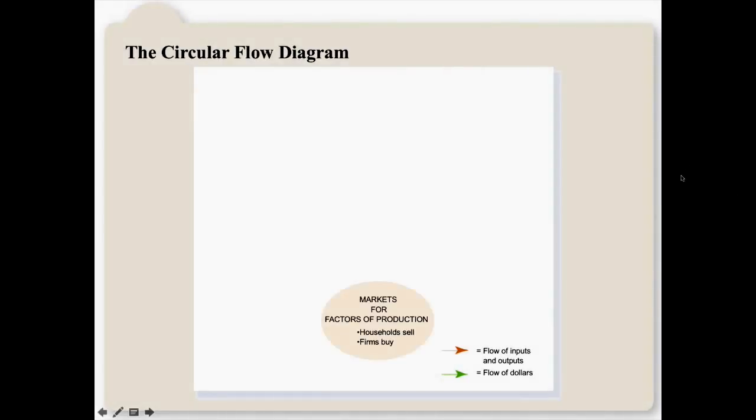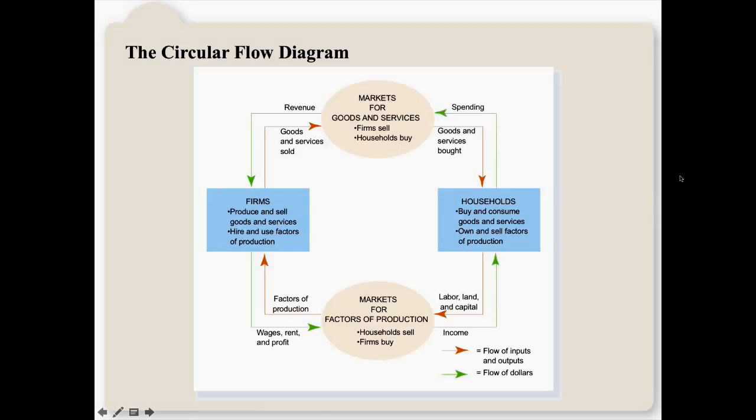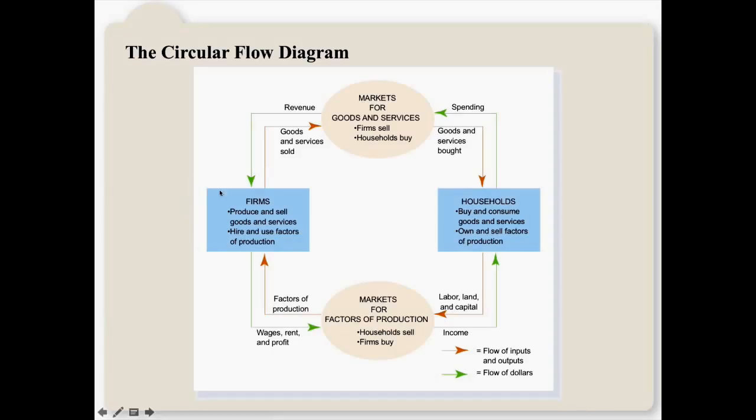In the circular flow diagram, households own the factors of production. The three factors of production are land, labor, and capital. And you can see that down here on what's called the physical flow, which is the inner loop. Households own land, labor, and capital that they sell to firms via the market for the factors of production. In exchange for this, households are paid wages, rent, profit, which becomes income for them.